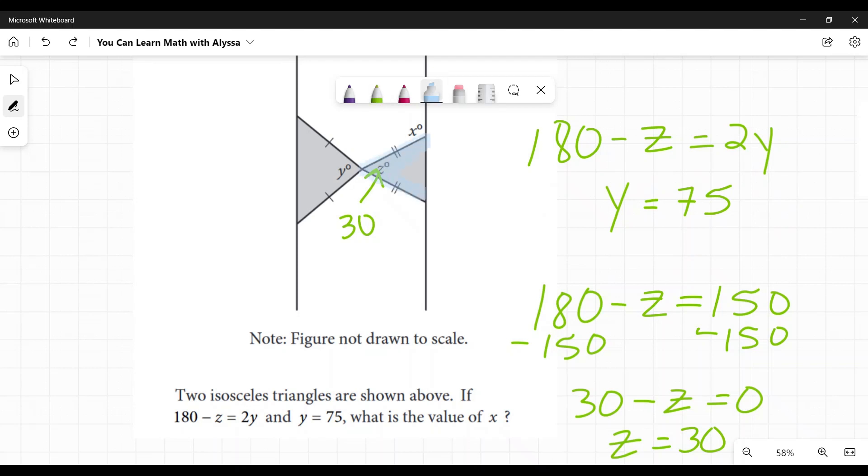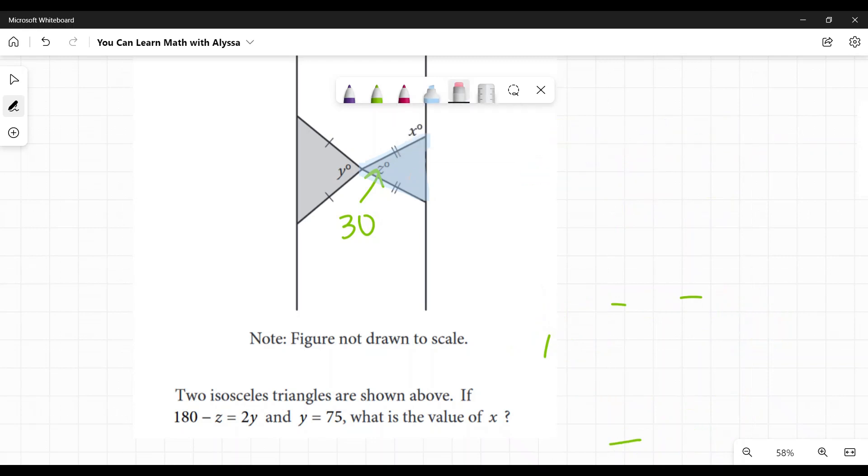Now, all we need to look at is that this is an isosceles triangle, and the top angle here is 30. An isosceles triangle, oh, come on. It's not letting me change to an eraser. There we go. So an isosceles triangle, the big takeaway with an isosceles triangle that you need to know for this is that the base angles are congruent always.